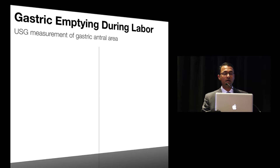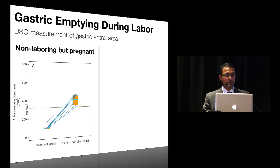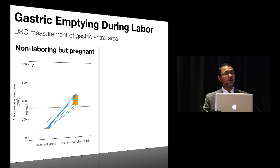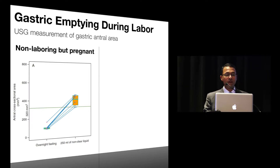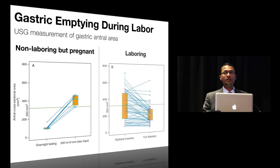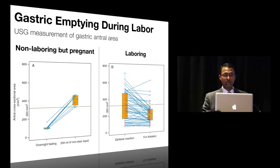The study was done in two parts. First, they validated the utility of this tool in pregnant women by determining the cutoff value corresponding to increased gastric content. They gave six non-laboring term pregnant women about 250 mls of non-clear liquid and performed ultrasound measurements both prior to and immediately after, arriving at a value of 320 mm² as the cutoff for increased gastric volume. They then measured antral cross-sectional area in parturients presenting in spontaneous labor at two time points: prior to epidural initiation and at full cervical dilation. Patient-controlled analgesia was offered to all patients.